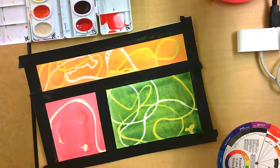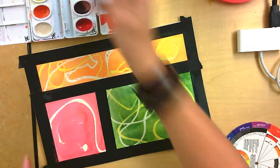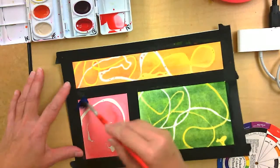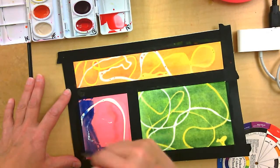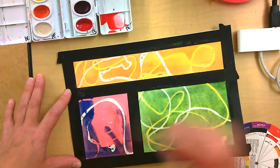There we go. Now I'm going to take that same blue and add it over my red so I can get a violet over here.